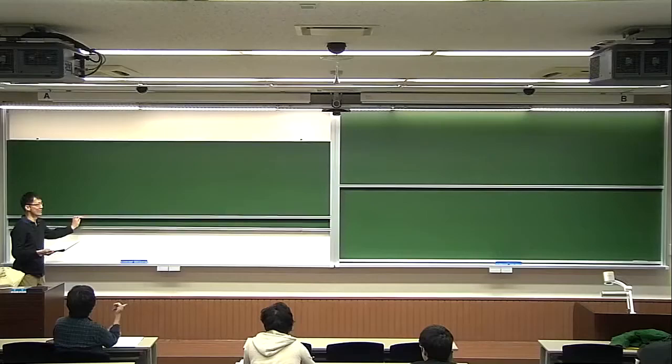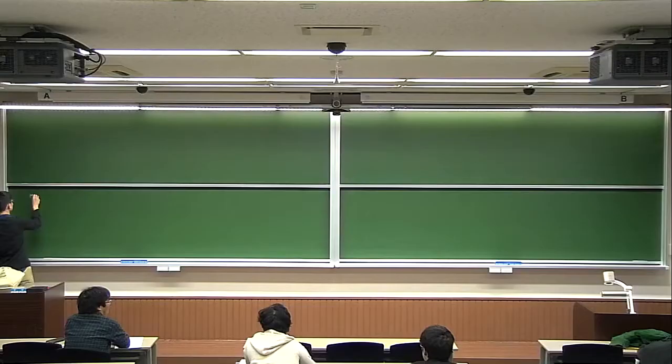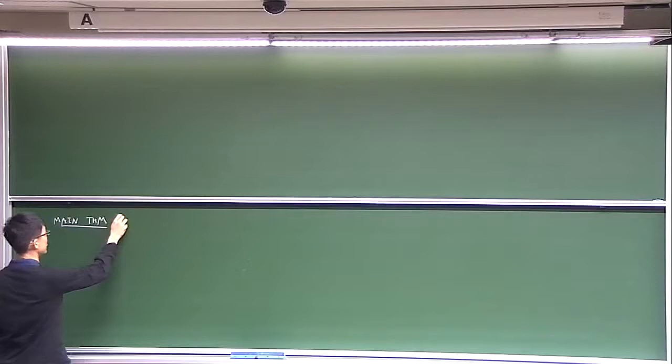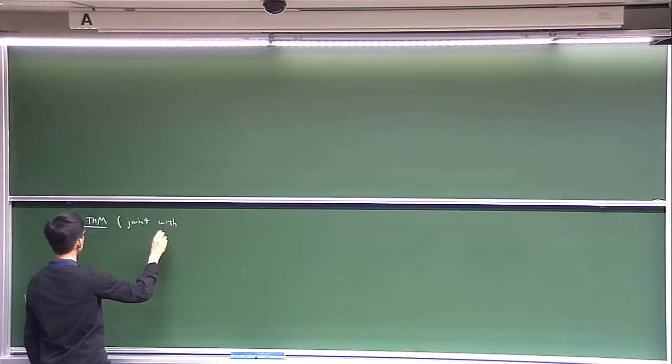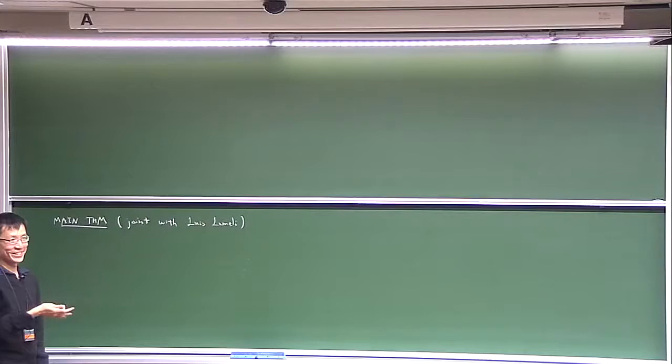The last time I stated the main theorem of the corollary, so I thought I should restate that. I also neglected to say last time that this result is a joint theorem with Luis Lomédi. So the theorem is: given a bunch of data, you can find some cuspidal representation with some properties.